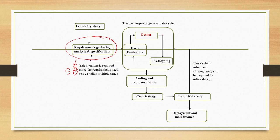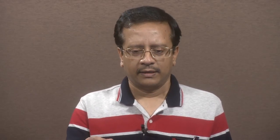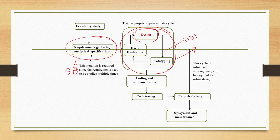Once the SRS is ready, we enter into the Design-Prototype-Evaluate cycle, starting with Design. In Design, two designs are referred to: one is Interface Design and the other is System Design. First we do Interface Design — how to design the interface and interaction to ensure usability. That design has to be prototyped and evaluated to refine it. Once Interface Design is stabilized, we go for System Design. At the end of the Interface Design cycle we get an Interface Design Document, and after the System Design cycle we get the final Design Document.